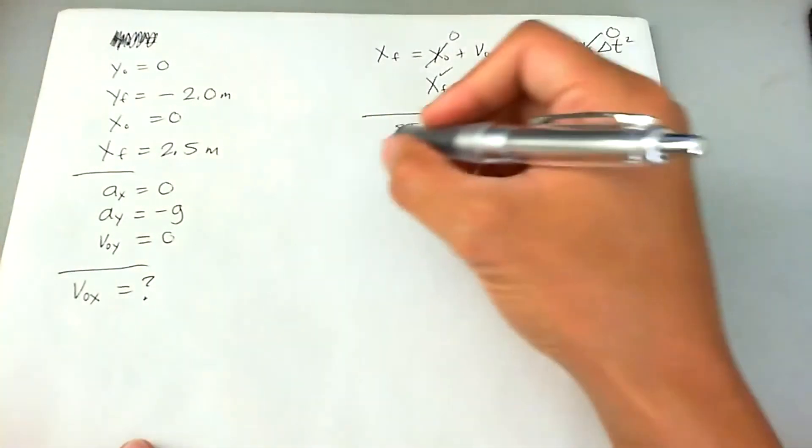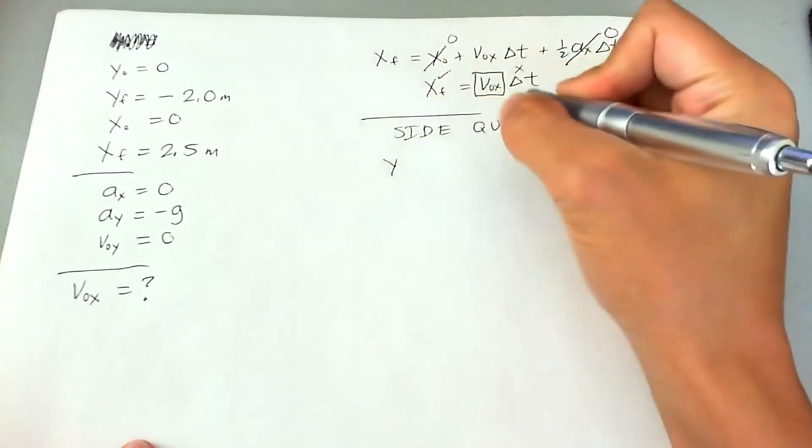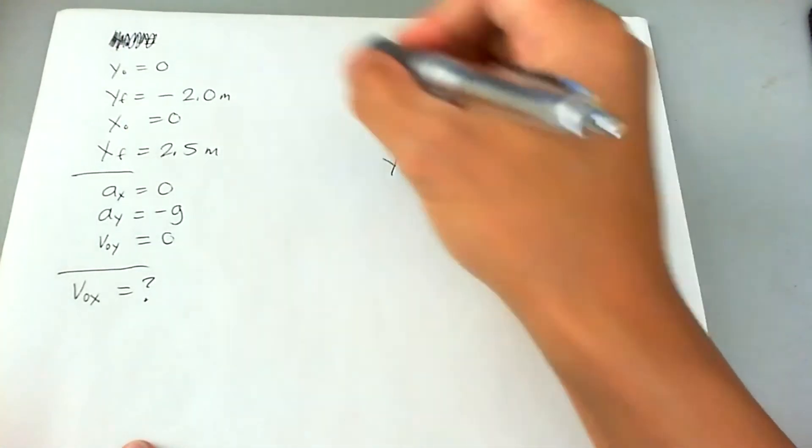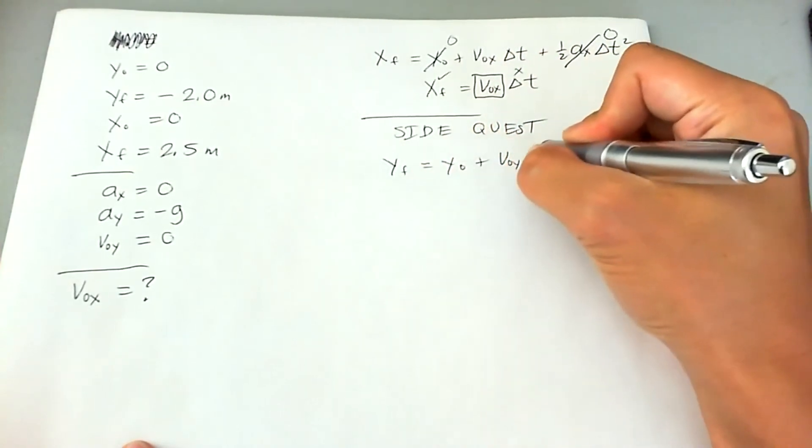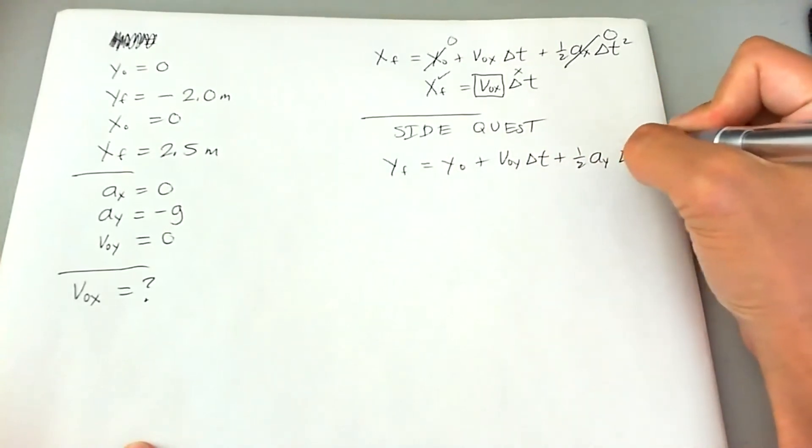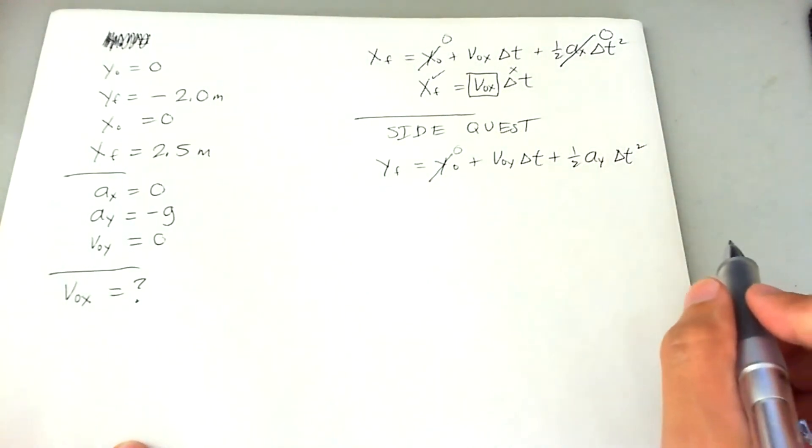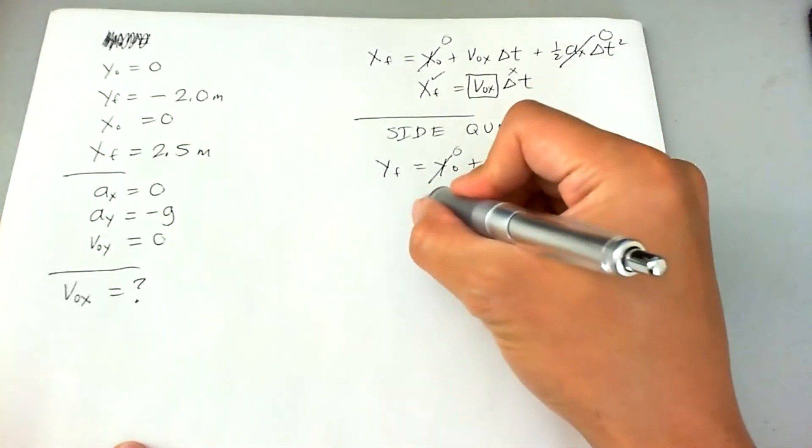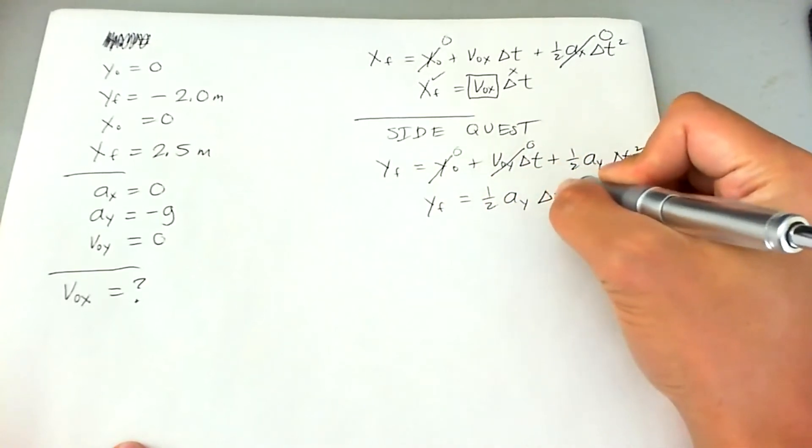So that being the case, we can use the Y component of his motion. So let's go ahead and do that right now by using the same equation. And it so happens that the same equation works out. So now what we want to find is delta T knowing the parameters given in this given area. We know Y naught is zero because we defined it that way. And we know that the initial Y velocity is also zero.